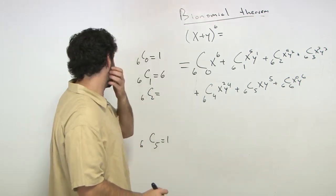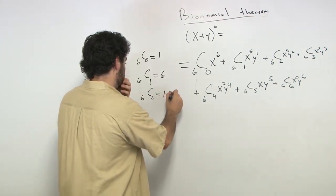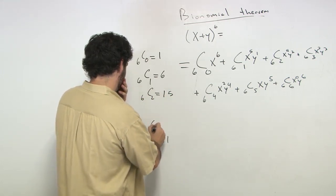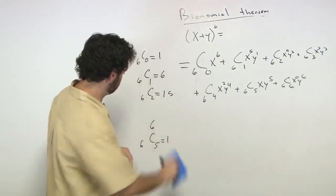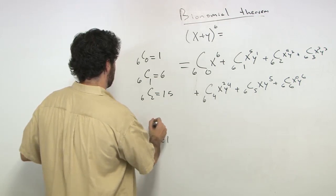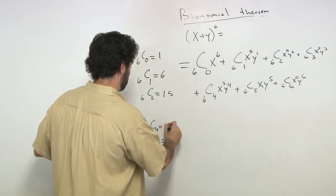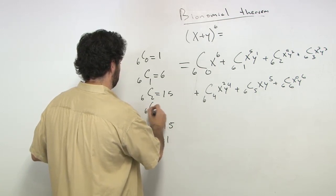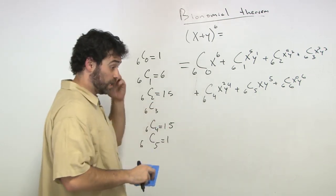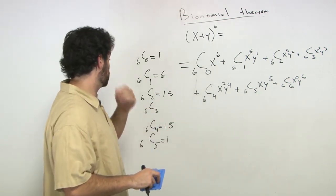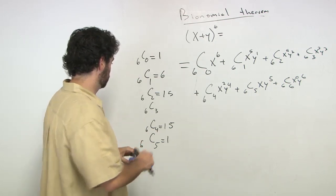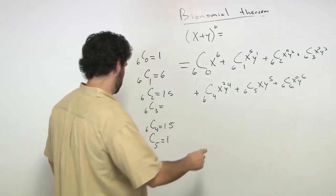So we just got to figure out 6c2. 6c2, if we work that out, is going to give us 15, which is the same thing as 6c4, which is 15, leaving us with 6c3.